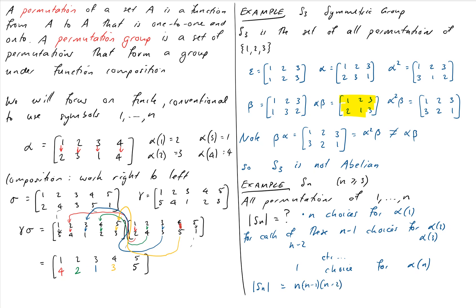This makes sense for S3, where we found six elements — and indeed 3 factorial equals 6. Sn is also not abelian for n greater than 3: we can just define permutations that fix elements 4 through n in place and let the first three permute freely. This effectively embeds S3 as a subgroup inside Sn, and since S3 is not abelian, Sn cannot be abelian either.